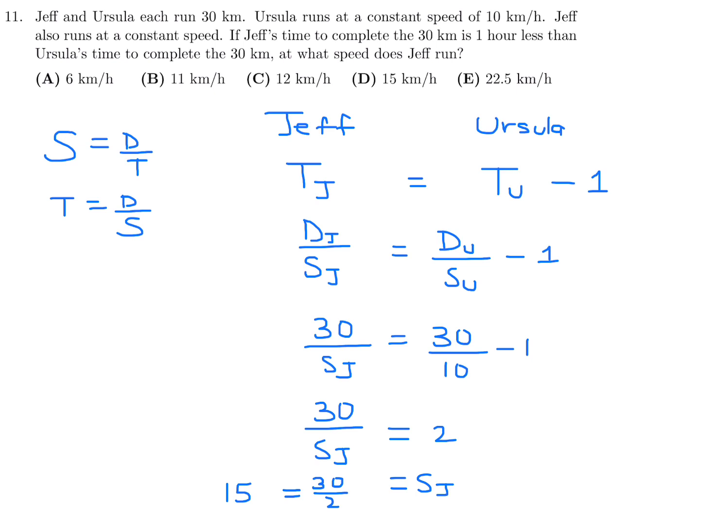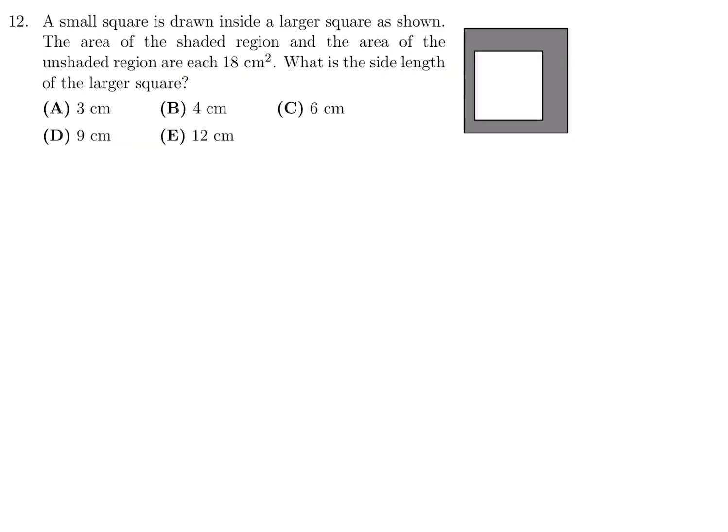11 is, therefore, D. A small square is drawn inside a larger square as shown. The area of the shaded region and the area of the unshaded region are each 18. What is the side length of the larger square? Okay, so this shaded region is 18, and this unshaded region is 18, so the total area is 36.